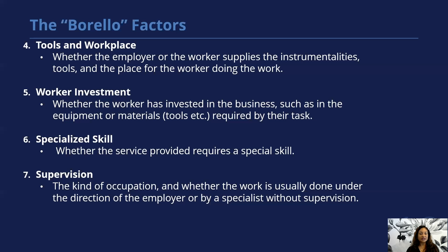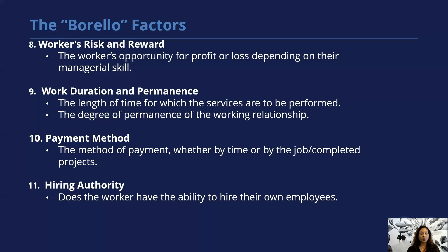The sixth factor is the specialized skill of the services being provided. The seventh is whether the work is usually done under the direction of the employer or by the specialist or worker without any supervision. The eighth factor is the worker's risk and reward — is there opportunity for the worker to have profit or loss depending on their skill sets? The ninth factor is the duration and permanence of the work — the length of time for which the services are performed, the degree of permanence of the working relationship, whether the work is short-term or ongoing, and whether the relationship is expected to be long-term.